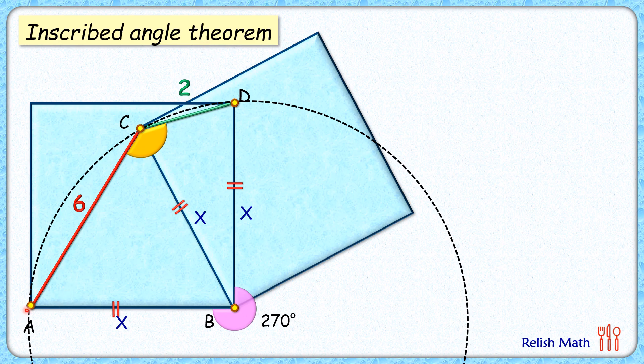The angle subtended by this major arc at the center is 270 degrees, so the angle subtended by it on the remaining part of the circumference will be half of it, or 135 degrees. Now let's join D and A. This triangle, triangle ABD, is a right angle triangle with side lengths x and x. By the Pythagorean theorem, the length DA will be root 2x.